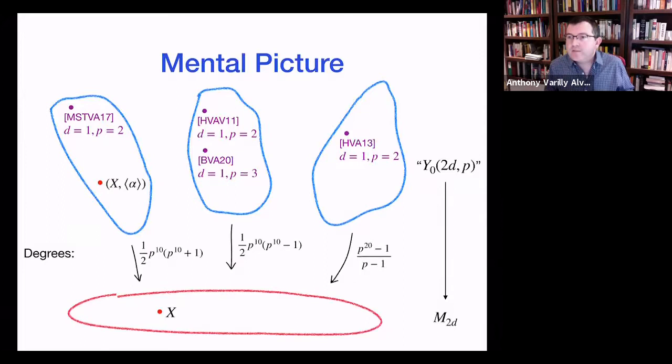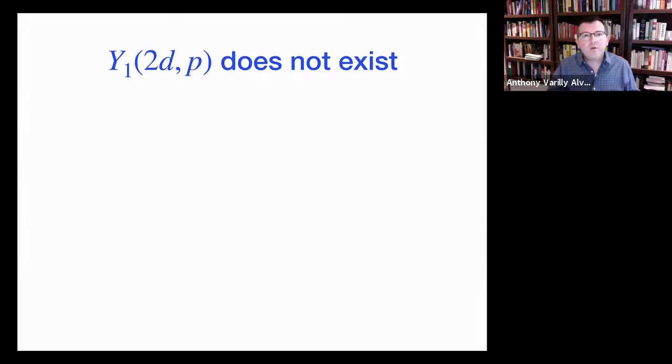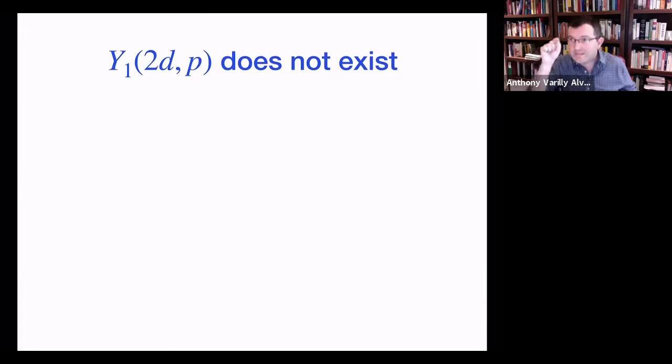Sadly, I put quotes around 'Y_1(2d,p)' — it's time to face the music. There really isn't such a moduli space Y_1(2d,p). Let me talk about why. I know in the previous slide I had a Y_0 parametrizing the level structure of a subgroup of order p. But let me pivot to the case where what I really want to parametrize is the actual element of order p, not just the subgroup — kind of like the difference between X_0 and X_1 in the modular curve world.